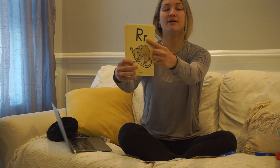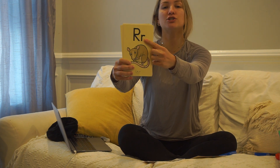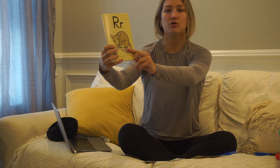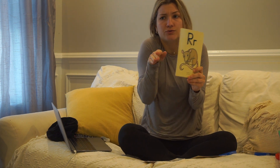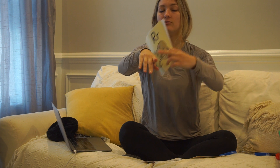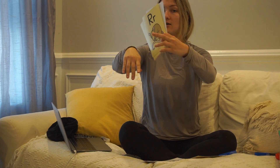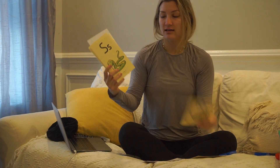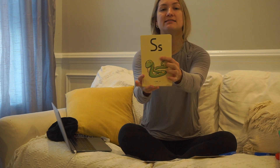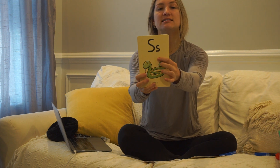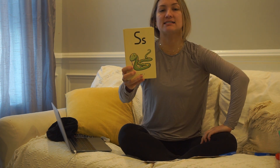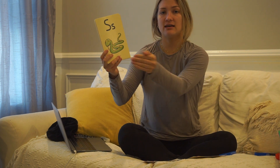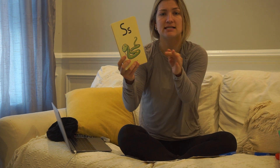Letter R, sound: R. Picture: rat. R R, rat. Or R R, ring. R, ring. Letter S, sound: S. Picture: snake. S S S, snake.